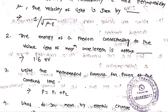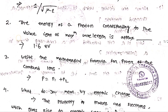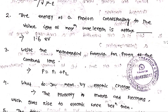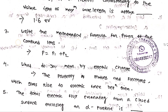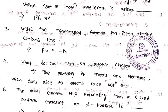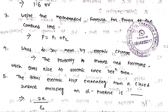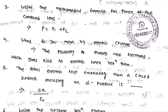The energy of a photon corresponding to the visible light of maximum wavelength is approximately 1.6 eV. Write the mathematical formula for the power of a compound lens: P = P₁ + P₂.